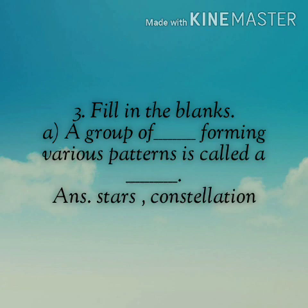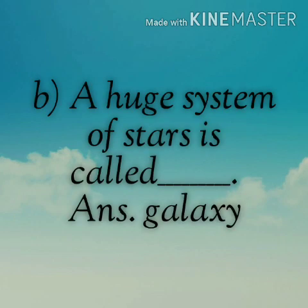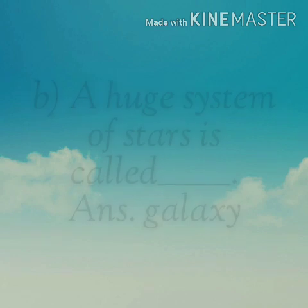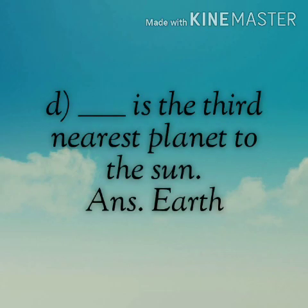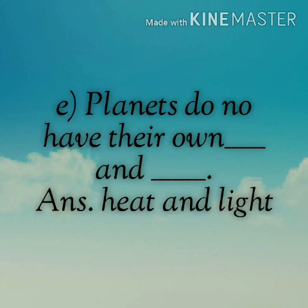Fill in the blanks. A: A group of stars forming various patterns is called a constellation. B: A huge system of stars is called a galaxy. C: The moon is the closest celestial body to our Earth. D: Earth is the third nearest planet to the sun. E: Planets do not have their own heat and light.